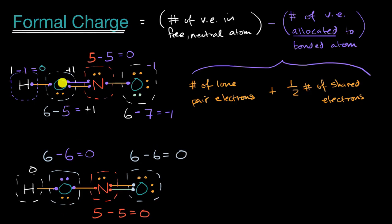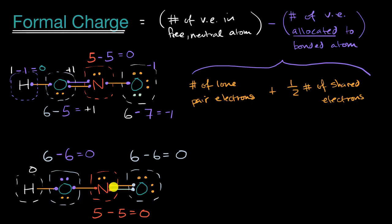So what we see is that the first resonance structure for nitrous acid had formal charges: plus one on one oxygen and minus one on the other. While the second structure had no formal charge — everything had a formal charge of zero. As we'll see in future videos, the closer the individual atom formal charges are to zero, the more likely that resonance structure will contribute more to the resonance hybrid. The whole point of this video is just to get comfortable calculating formal charge for the individual atoms in a molecule.